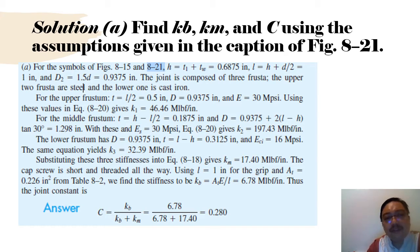Solution A: Find KB, KM, and C using the assumptions given in caption 8-21. For the symbols in Figure 8-15 and 8-21, H equals TI plus TW, equals 0.6875. L equals L plus D/2 equals 1 inch, D is 1.5 inch equals 0.9375 inch. The joint is composed of three frusta. The upper two frusta are steel and one is cast iron. The tip in doing this is you trace back what the value is. If you find 0.5, you trace back where does this 0.5 come from. When you put all the values in the equation, you get the joint constant C.